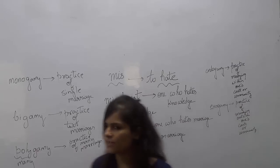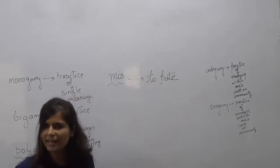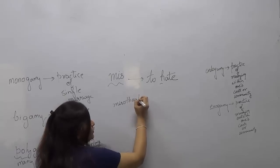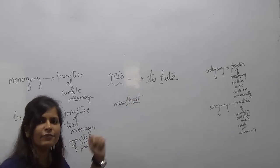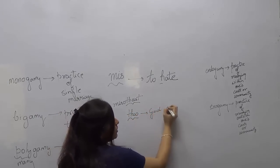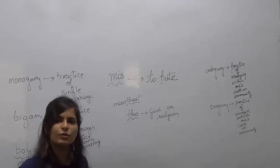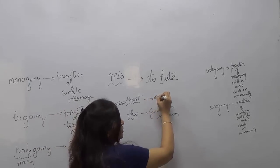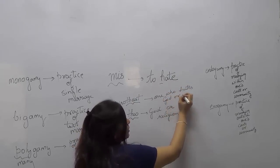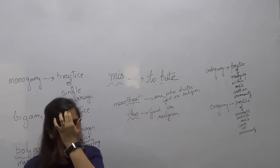I hope all the words are clear. Moving ahead with new words, the next word is 'misotheist'. 'Theist' is taken from the root word 'theo', which means God or religion. So the meaning of 'misotheist' is one who hates God or religion.